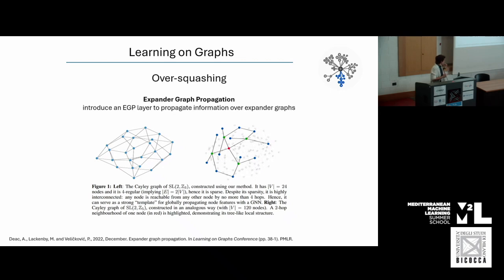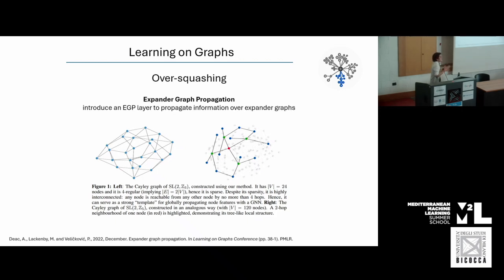One particular approach — which you'll likely see in the practical session — is expander graph propagation. We add a layer in our GNN that defines and uses Cayley graphs. These graphs have the same number of edges as the original graph but different connectivity. What makes Cayley graphs very interesting is that they are very sparse yet very well connected — any node can be reached in no more than four hops. By adding one of these layers, we allow nodes to access information from all over the graph.